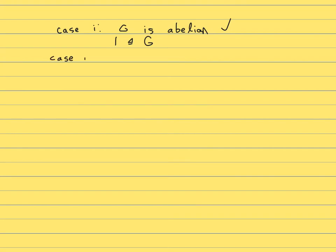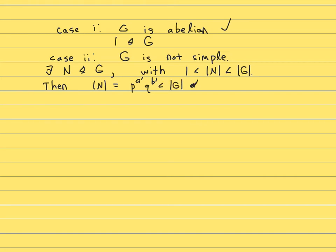So the only case that's interesting is that G is not simple. What does that mean? That means that there must exist a proper normal subgroup whose size is between one and all of G. Well then what do we know? We know that the size of N is P to the A prime Q to the B prime and it's strictly less than the size of G. So by induction, N is solvable.